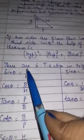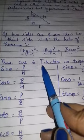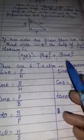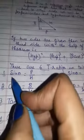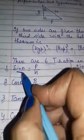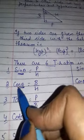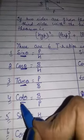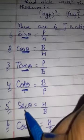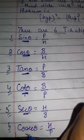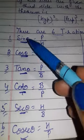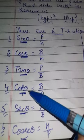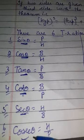Now one more thing: there are six trigonometric ratios in trigonometry. Six T ratios. Which ones? First is sine theta, second is cos theta, third is tan theta, fourth is cot theta, fifth is secant theta, sixth is cosecant theta. I repeat: sine theta, cos theta, tan theta, cot theta, secant theta, cosecant theta.